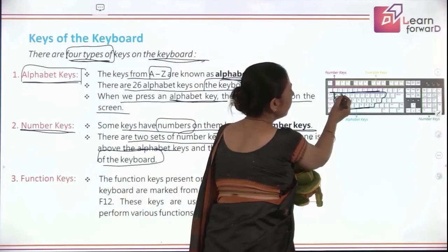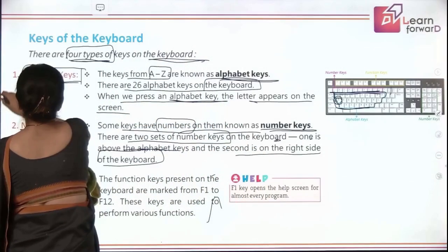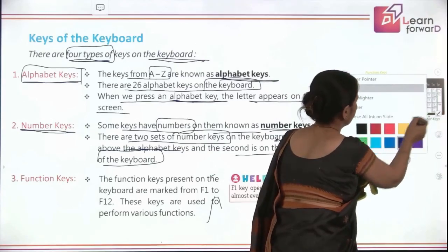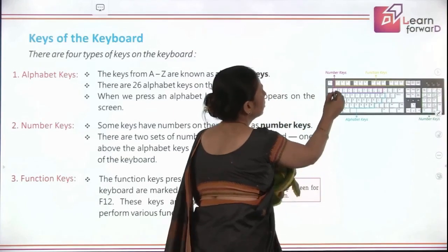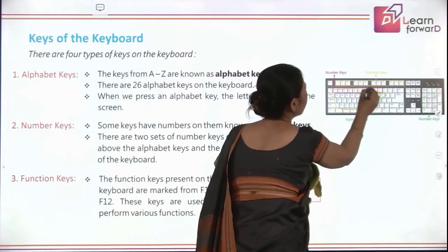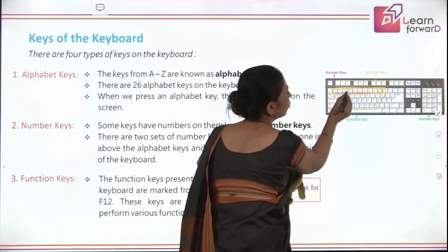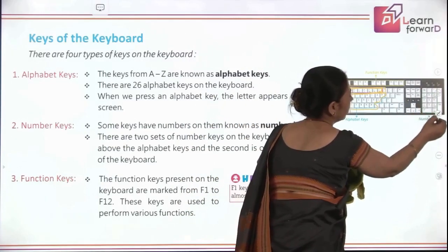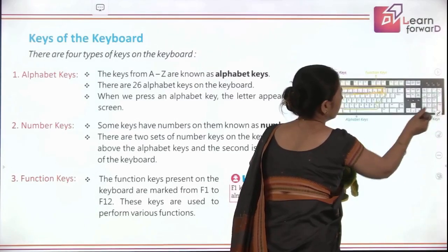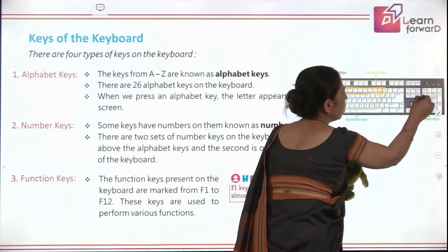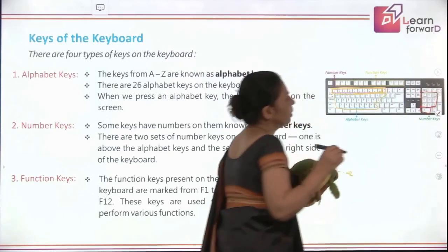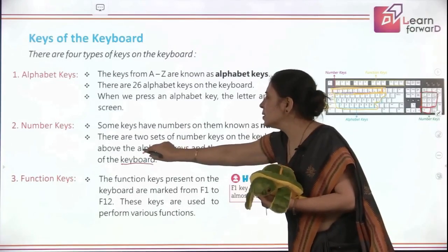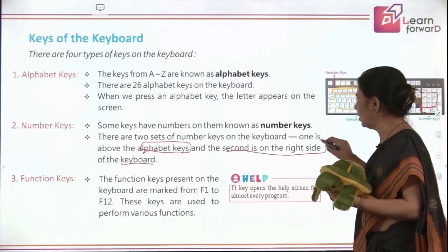Let me show you. Just above the alphabet keys, these are the 10 numbers: 1, 2, 3, 4, 5, 6, 7, 8, 9, and 0. And another number pad is here on the right side. So we have two sets of number keys on the keyboard — one above the alphabet keys and the second on the right side.